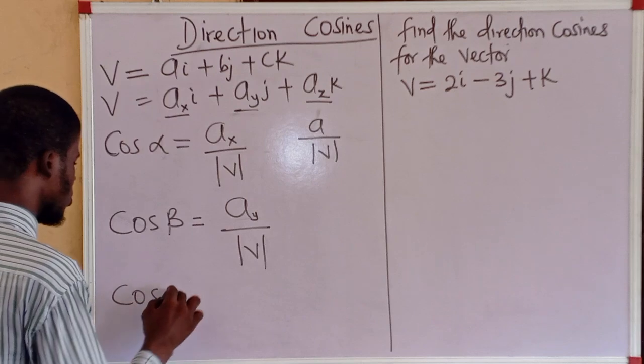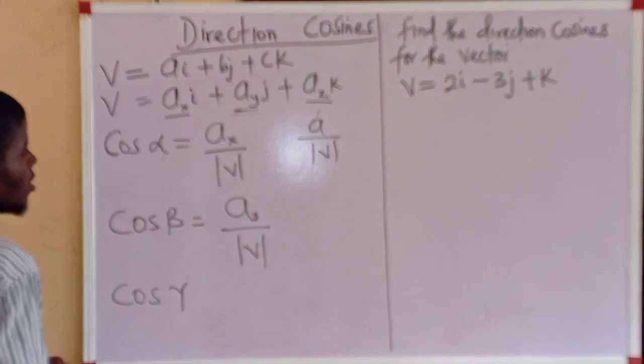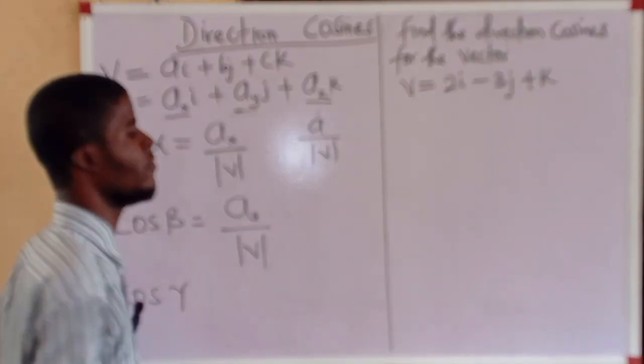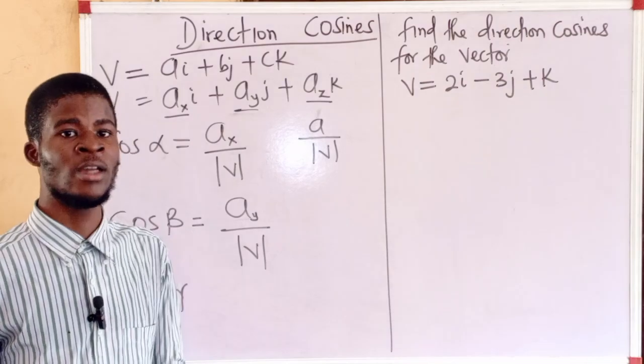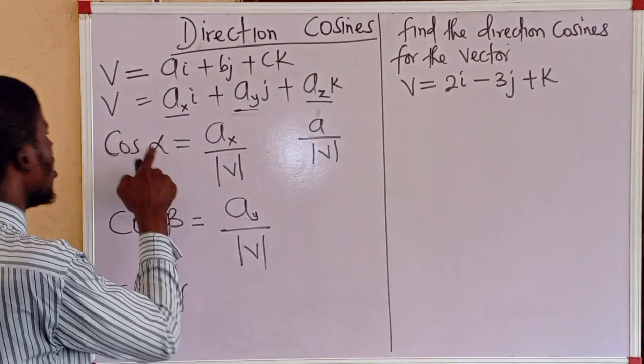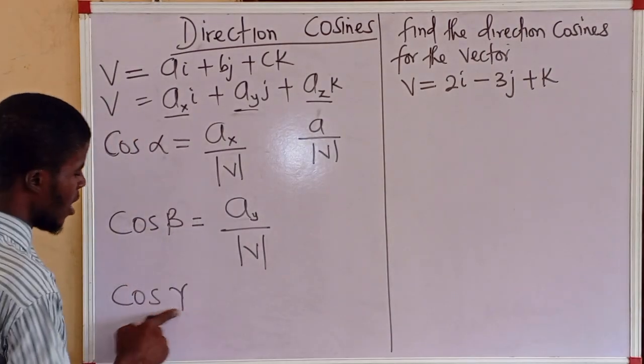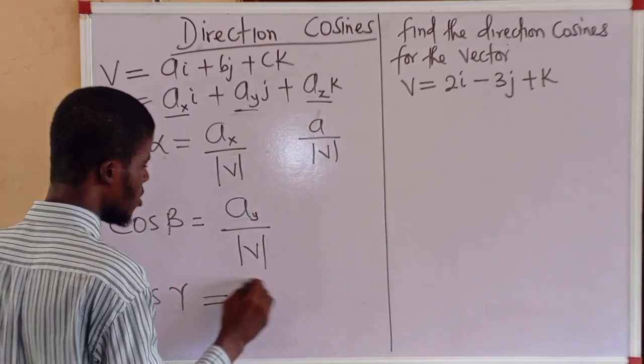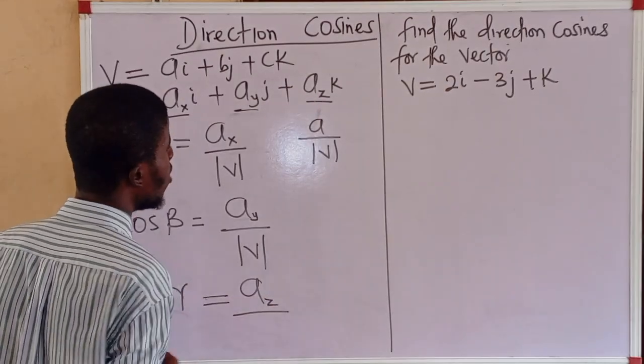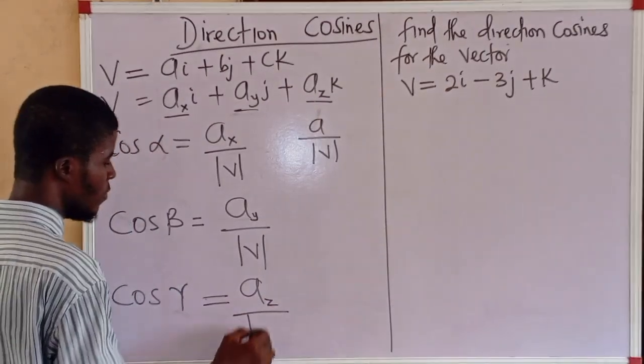And the last direction cosine, cos gamma. Gamma is the angle between the vector and the z axis. The z component, a sub z, all over the modulus of the vector.